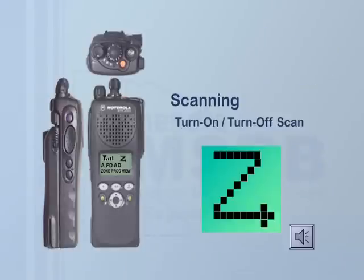To activate the scan feature, turn the 3-position ABC switch to B. The scan icon appears on the LCD display. If no talk groups are programmed in the scan list, 'list empty' appears on the LCD display and a warning tone sounds.